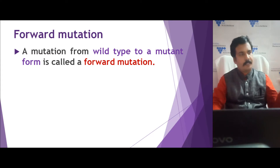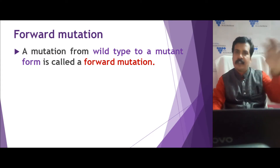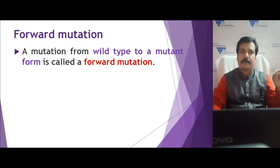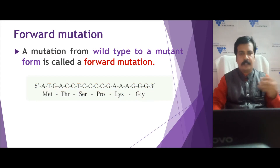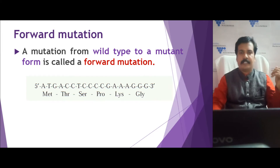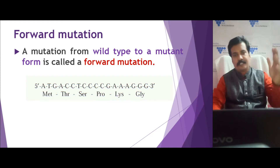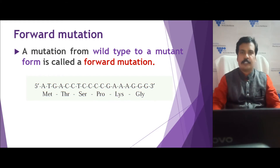A particular DNA sequence undergoes an alteration at any point, after which the sequence gets altered and the amino acid sequence changes. For example, ATG codes for methionine, ACC codes for threonine, and GGG codes for glycine. If any alteration happens in the sequence, the triplet codon changes, and when the triplet codon changes, the amino acid sequence also changes. This is called forward mutation.